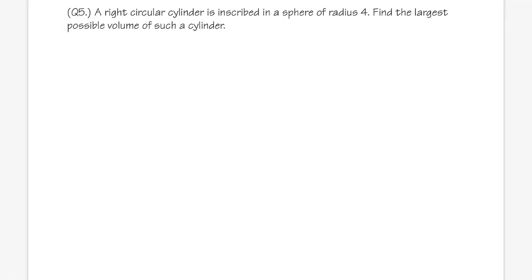Number five — slightly more difficult but still okay. We have a right circular cylinder with a circular base, and it says it's inscribed, meaning we're going to form a cylinder inside of a sphere. The sphere has a radius of four, and we are going to find the biggest possible volume of such a cylinder.